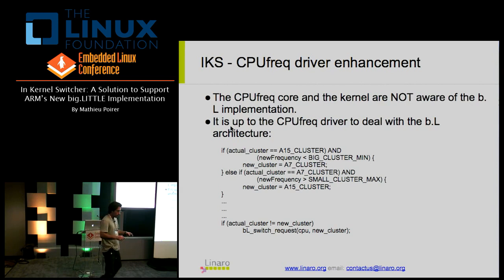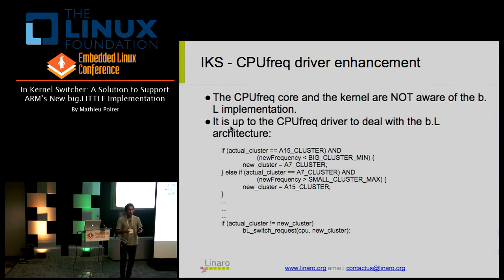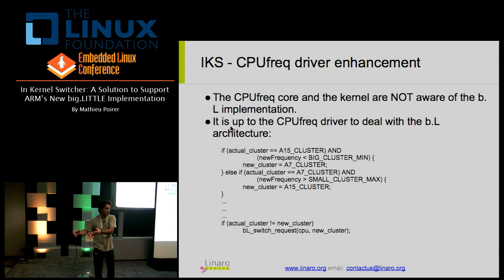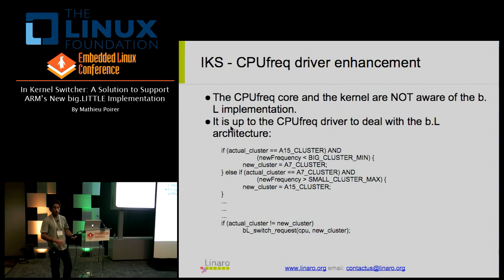The CPU frequency driver does a lot in this solution, but it comes down to about eight lines of code. If you're on the A7 cluster and a request comes in for a frequency that can only be accommodated by the A15, the new cluster becomes the A15, and vice versa. After some housekeeping, once the CPU frequency driver determines it wants to move to another cluster, it simply calls the switcher logic to move current processing from one core to the other.